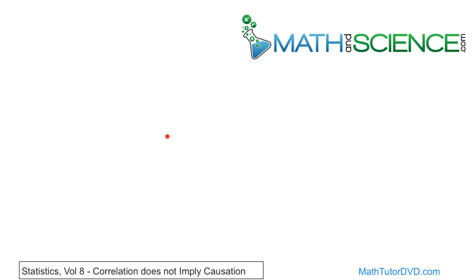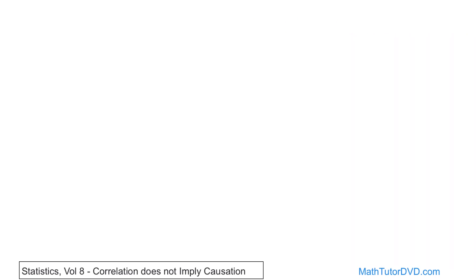When we're studying statistics, we calculate a correlation coefficient and we often jump to the conclusion that one of these things causes the other. But that's not always the case, and you've got to be really careful when you study this stuff to not jump to conclusions. The title of this section is Correlation Does Not Imply Causation — that means A does not always cause B. Let's take a look at some examples.